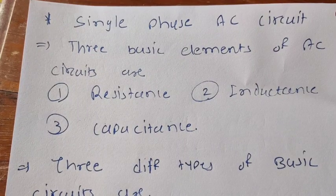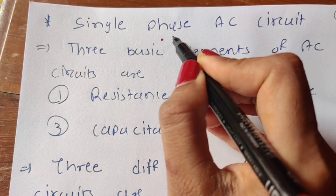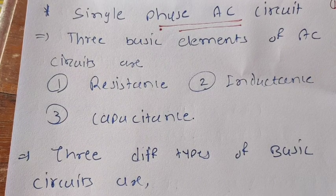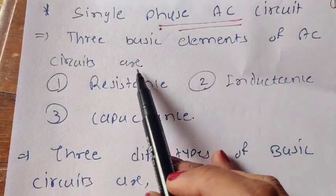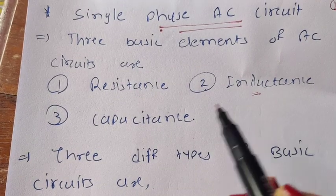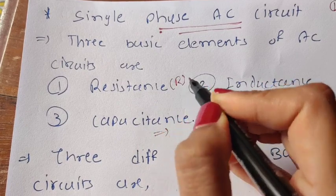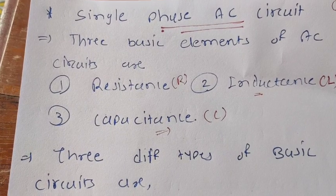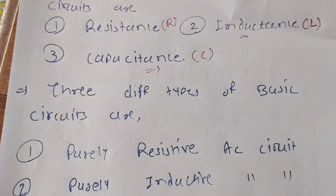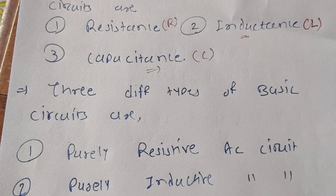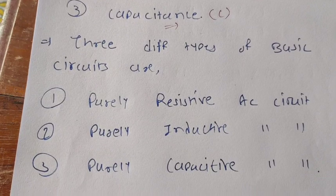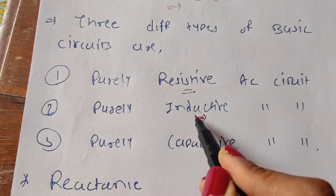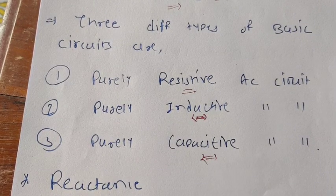Today we start with a new unit of single-phase AC circuits. There are mainly three basic elements of an AC circuit that we need to consider: the first one is resistance, the second is inductance, and the third is capacitance. There are three different types of basic circuits: a purely resistive circuit, a purely inductive circuit, and a purely capacitive circuit.